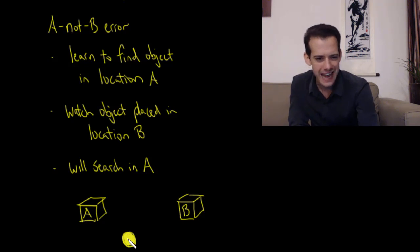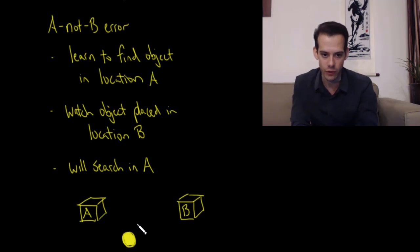They reach where they found it before, not where they watched it go. This suggests that they don't understand that the ball continues to exist and it's inside box B here. As they move out of the sensorimotor stage they stop making this error.